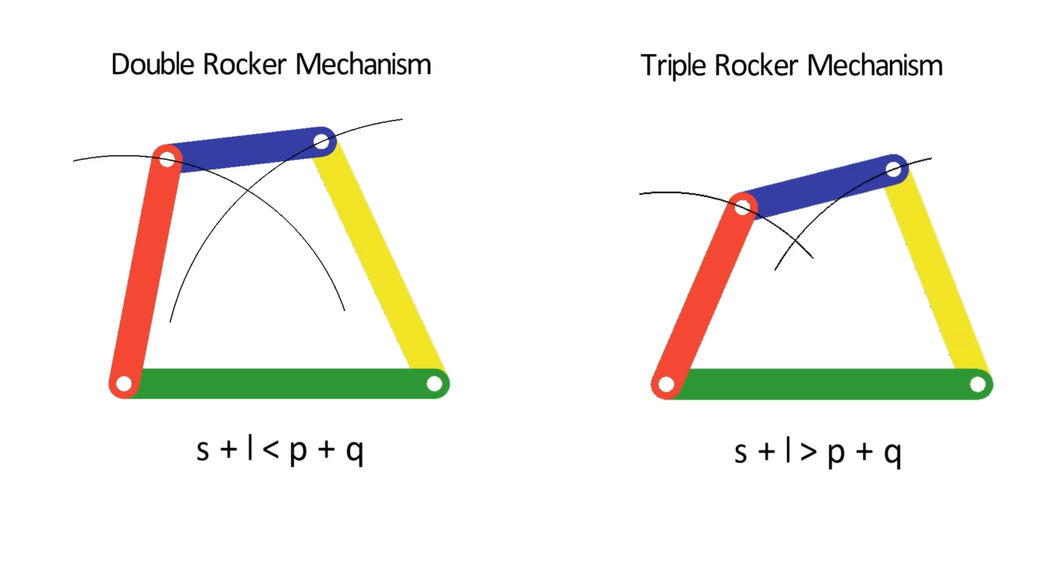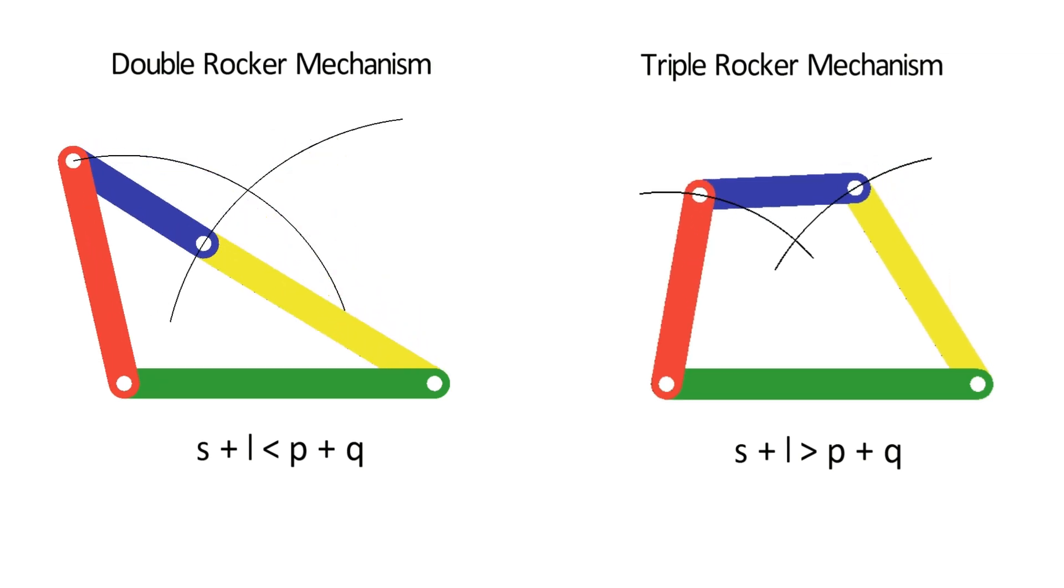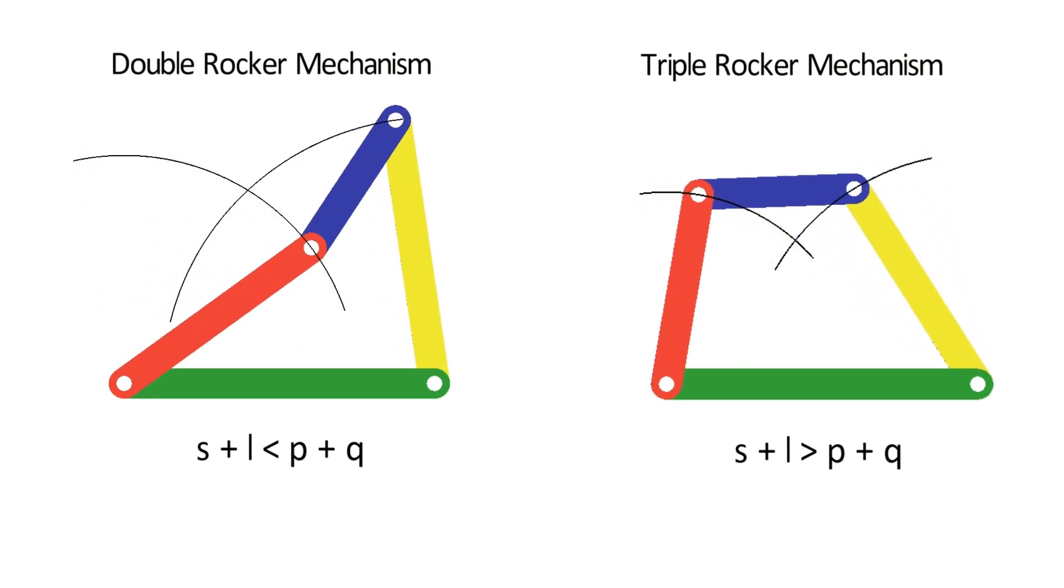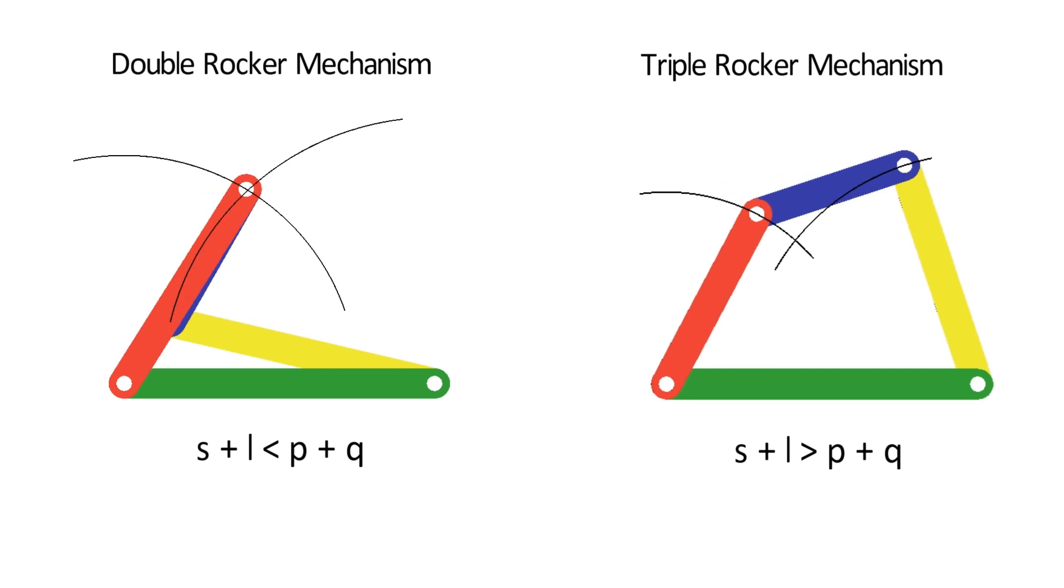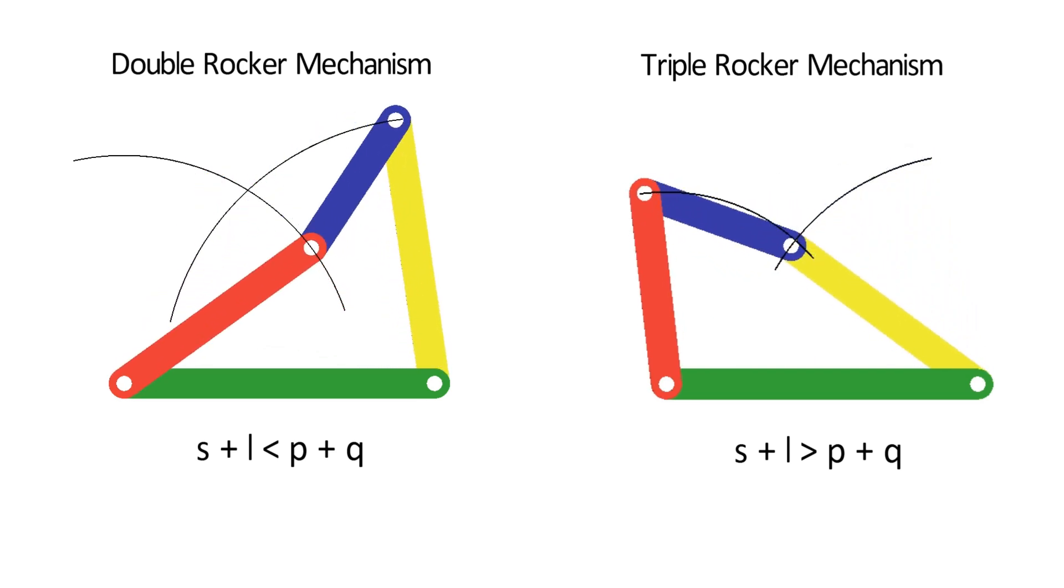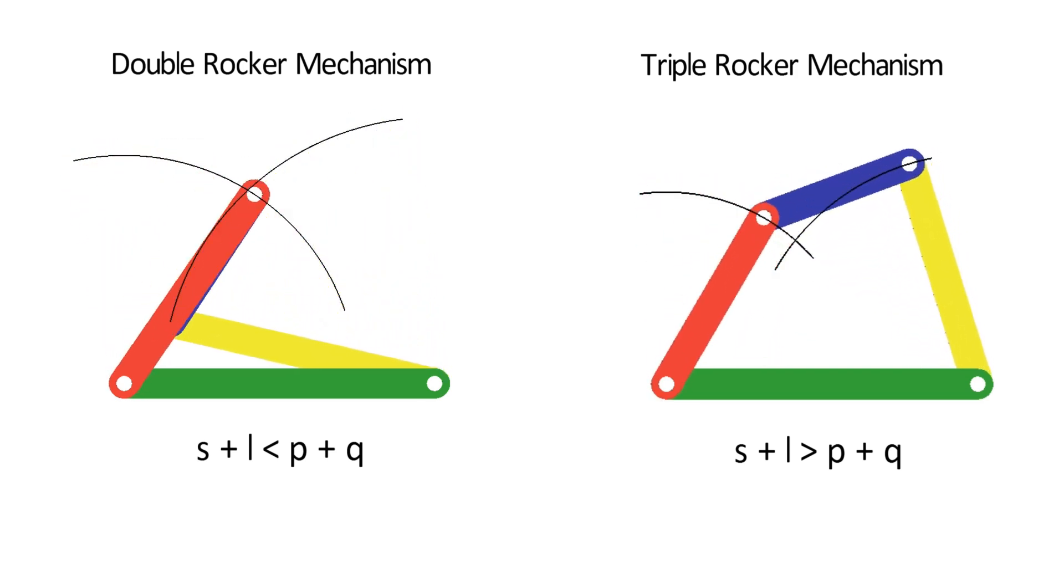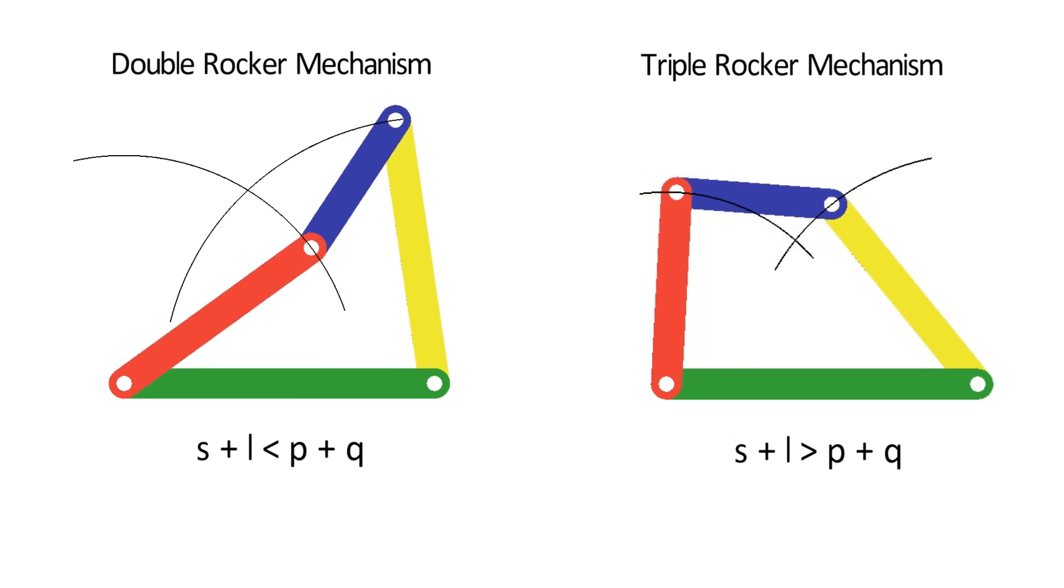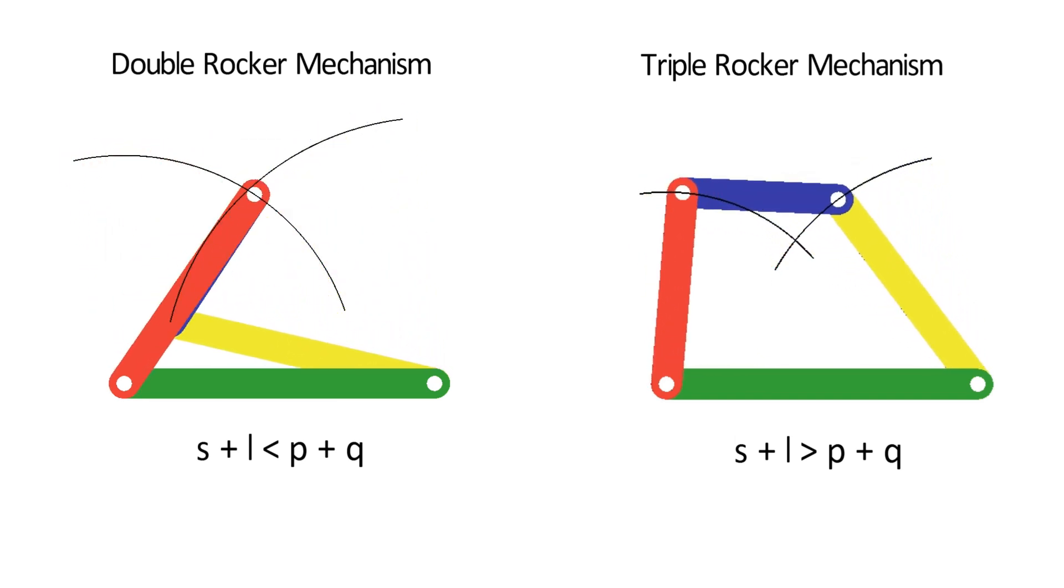I am a little confused. The double rocker mechanism, it being a Grashof linkage has its one of the links, which is coupler in its case, that makes a full revolution, whereas triple rocker mechanism, being a non-Grashof linkage, its coupler is also a rocker.